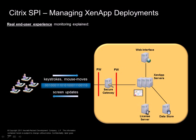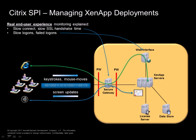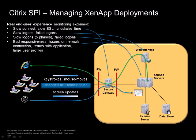For real end user monitoring: when the end user launches a web browser and connects to the web interface, slow connect or slow SSL handshake times at the secure gateway can be detected. Then slow logons and failed logons on the web interface are tracked. When the user launches an application, Citrix Pi can monitor slow logons on Xen App servers down to five phases, as well as failed logons. During application use, bad responsiveness, issues on network connection, issues with applications, or large user profiles can also be monitored.